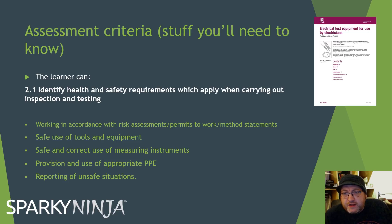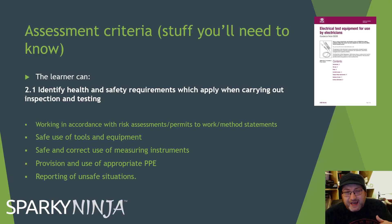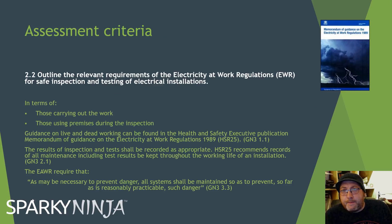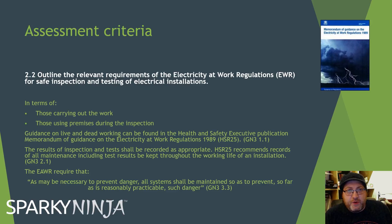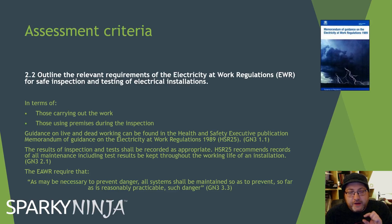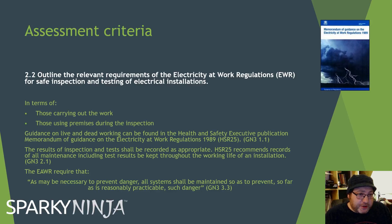Reporting of unsafe situations: you need to understand the reporting procedure, and that would be mapped with the system of work on the site. 2.2: Outline the relevant requirements of the Electricity Work Regulations for safe inspection and testing, in terms of two areas — those doing the work, and those using premises during the inspection.